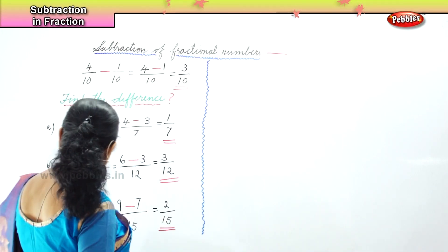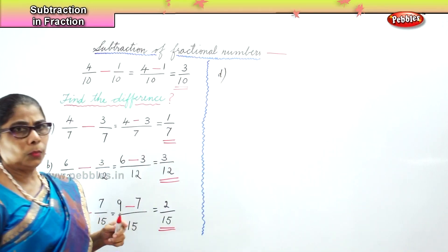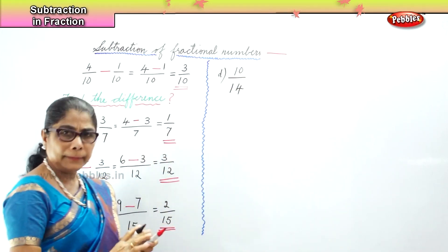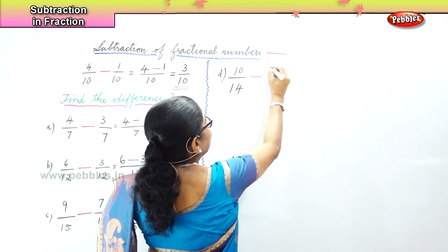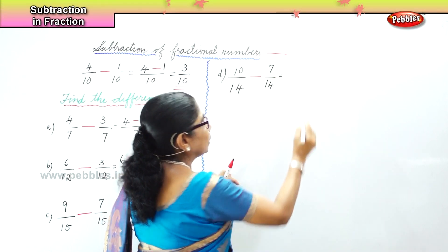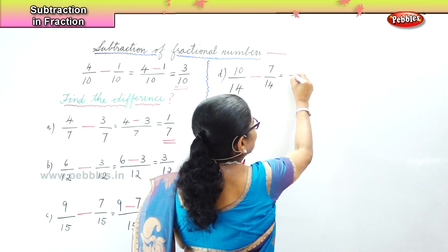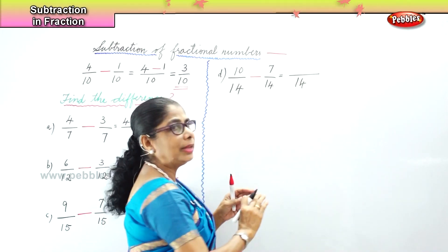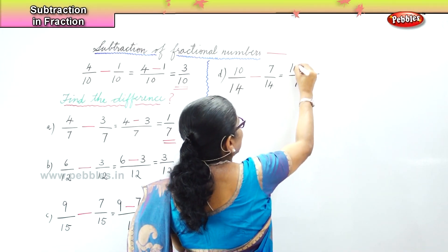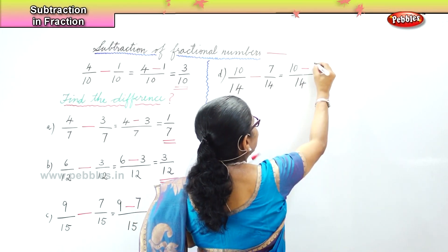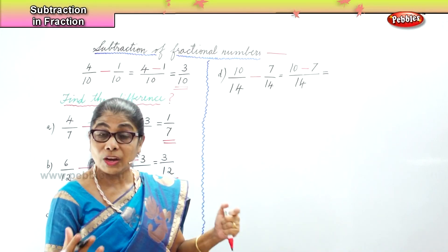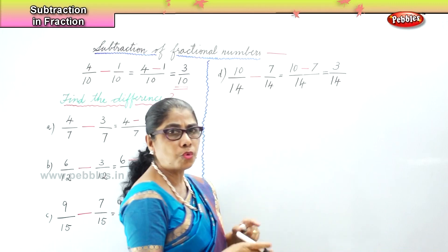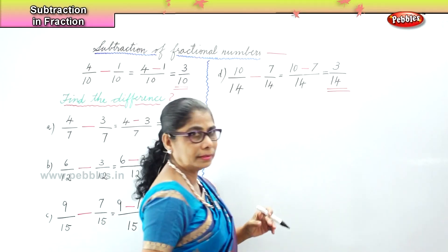Let's work out another sum. We have 10 by 14 minus 7 by 14. The denominators are the same for both fractional numbers. Therefore, we put down 14 as the common denominator, and then we have 10 numerator minus 7 numerator. 10 take away 7 — what do we get? We get 3, and we put down the denominator 14 — that gives us the answer 3 by 14.